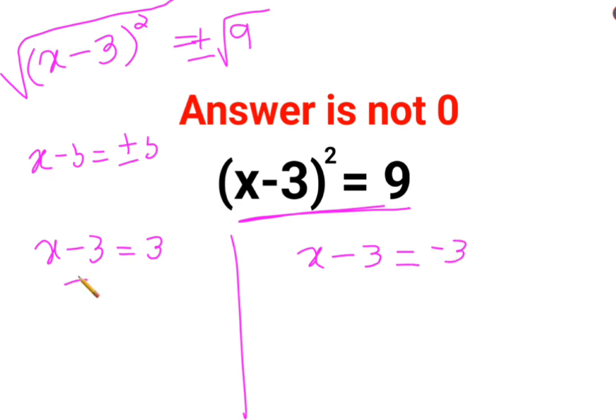So at this point, add both sides by 3 on both the equations. So here x = 0 and here we have x = 6. Let's put this over here.